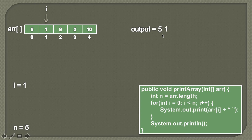Moving ahead, we will now increment the value of i by one, so i will become two. And it will point to the second index. We'll simply print the value at the second index, which is nine.